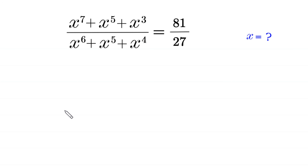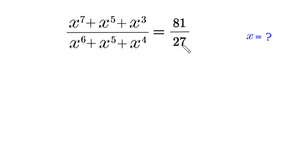Hello, welcome. We need to solve this algebra equation: x to the power 7 plus x to the power 5 plus x cubed, divided by x to the power 6 plus x to the power 5 plus x to the power 4, is equal to 81 divided by 27. We need to find all possible values of x.